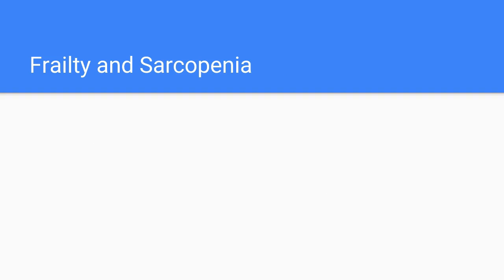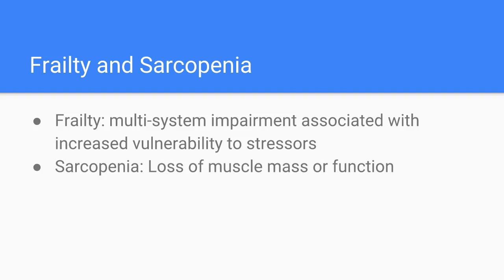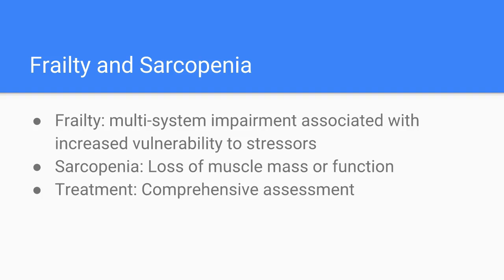So there we are. We know what frailty is: multi-system impairment associated with increased vulnerability to stresses. And we know what sarcopenia is: loss of muscle mass or function. And finally, we know how to treat it: comprehensive assessment.